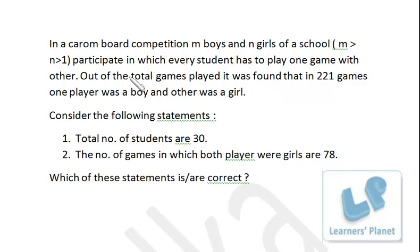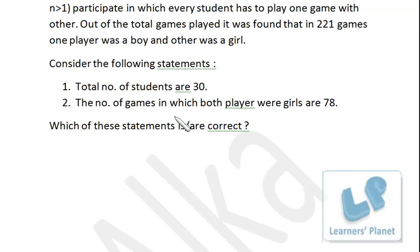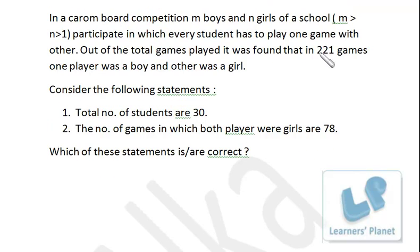There are M boys and N girls. And in 221 games, one player was a boy and other was a girl. That means out of M boys, one boy will be chosen in MC1 ways and one girl will be chosen in NC1 ways.